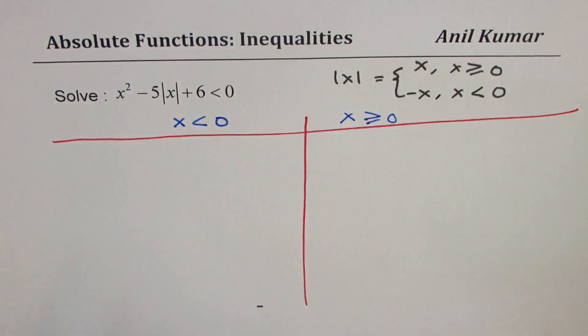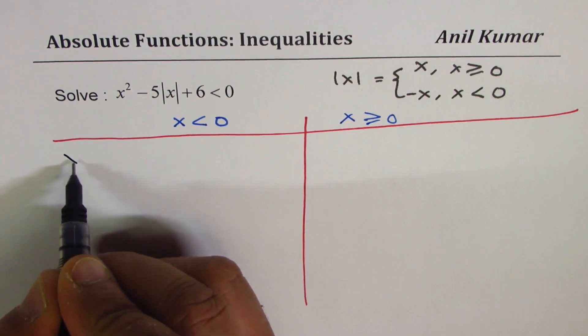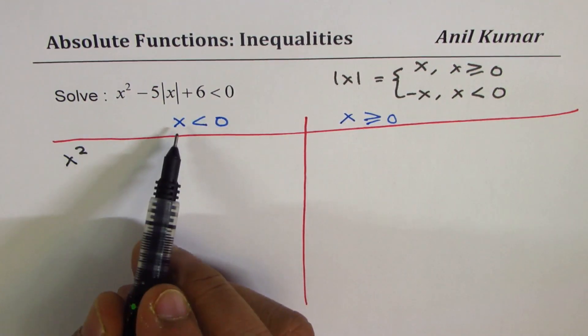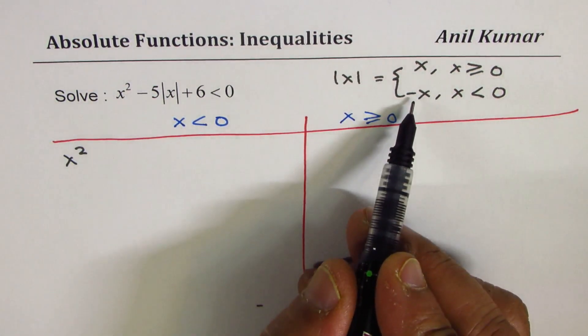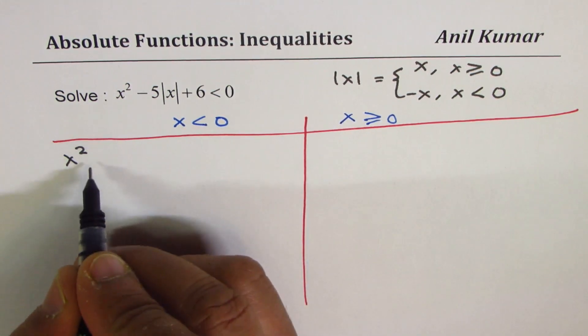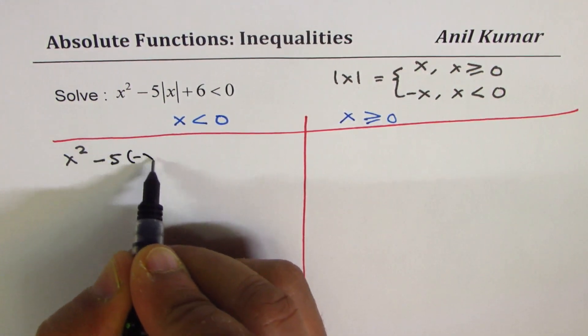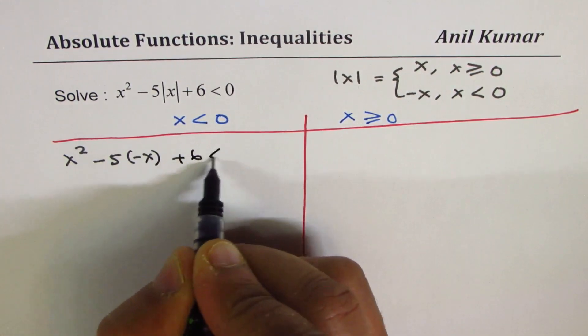We could rewrite this function as x squared. When x is less than zero, we are taking negative x, so that becomes minus 5 times negative x plus 6 less than zero.